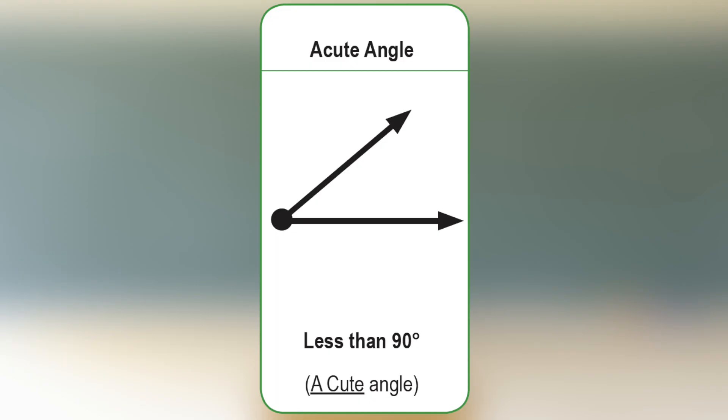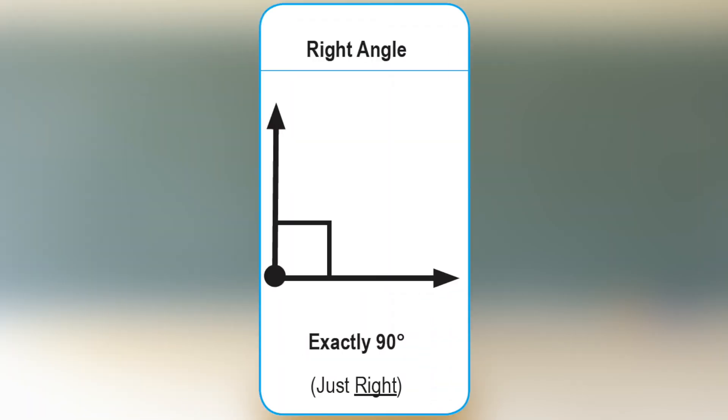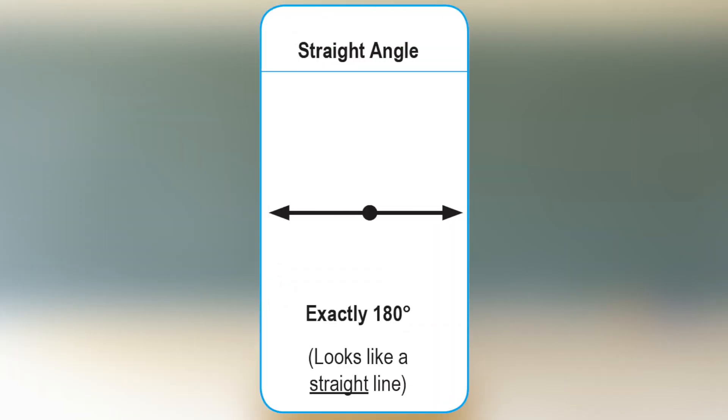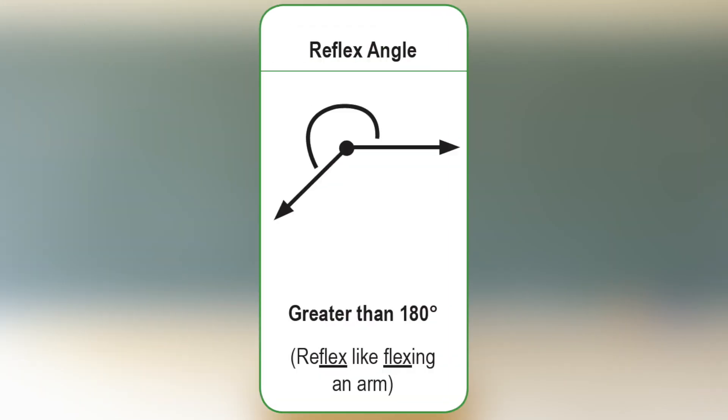An acute angle is less than 90 degrees, and that's a cute angle. A right angle is exactly 90 degrees, it's just right. An obtuse angle is greater than 90 degrees but less than 180 degrees. Obtuse sounds like obese or big. A straight angle is exactly 180 degrees, and it looks like a straight line. A reflex angle is greater than 180 degrees. Whoa, reflex, like flexing an arm!